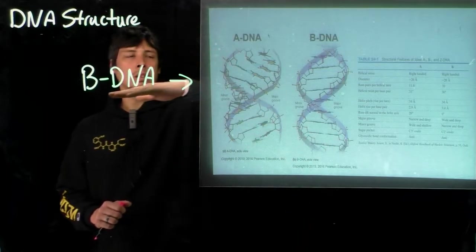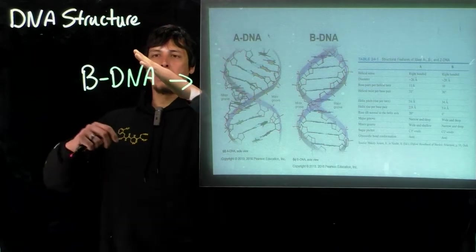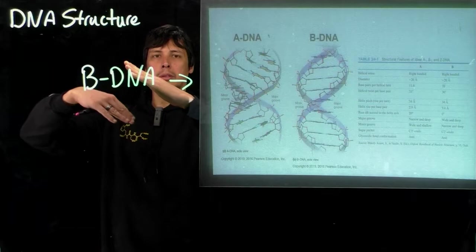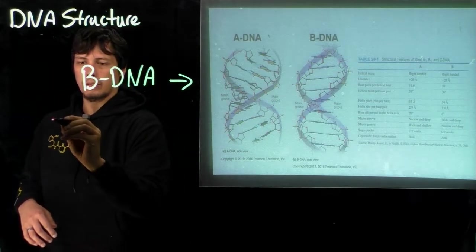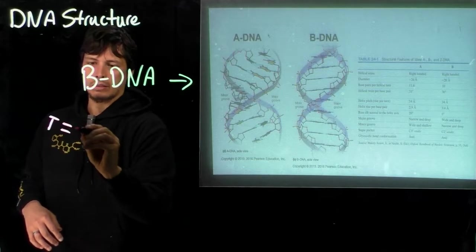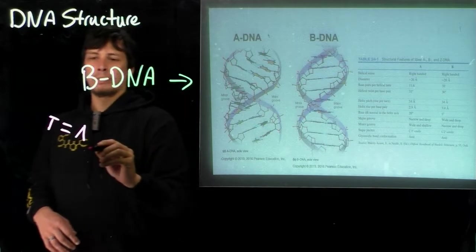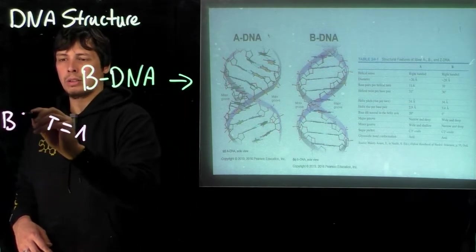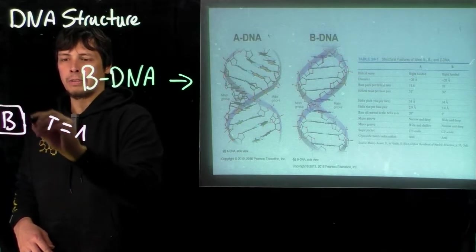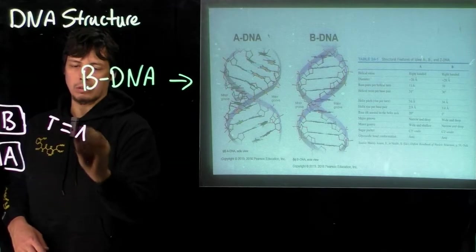...the tilt of the plane. If you think of the two complementary nucleotides acting as a plane, so if we have a T that's forming two hydrogen bonds with an A, for the B-DNA, this will have a tilt that could be described as this.